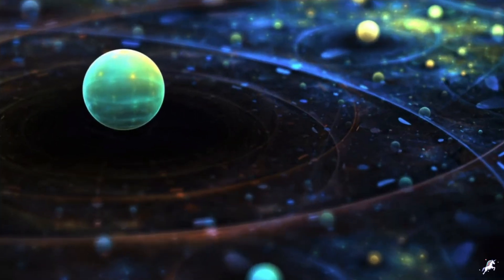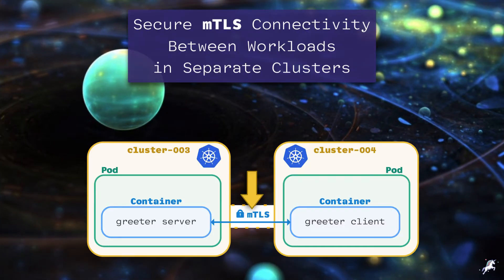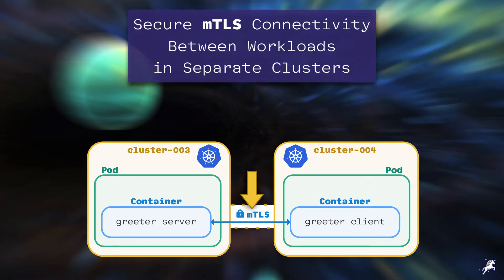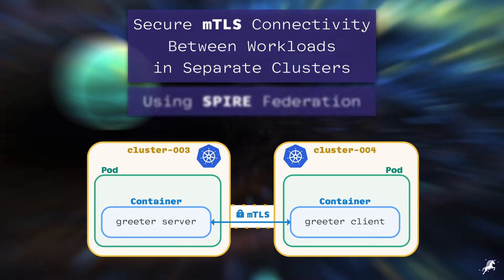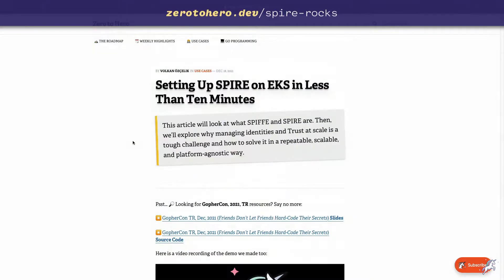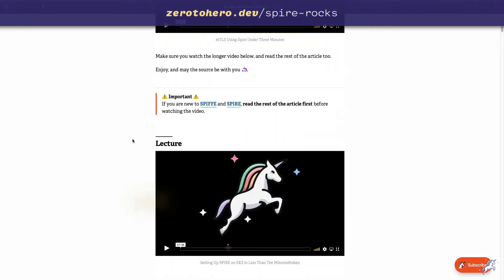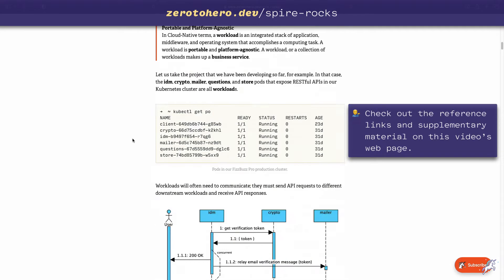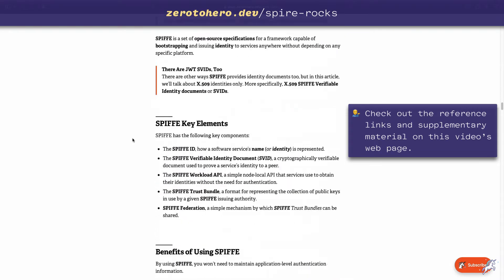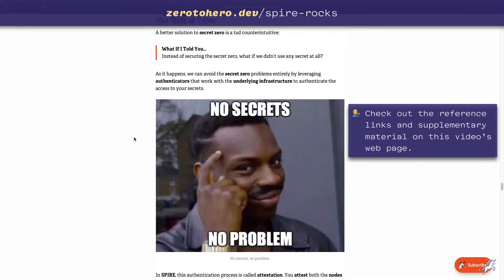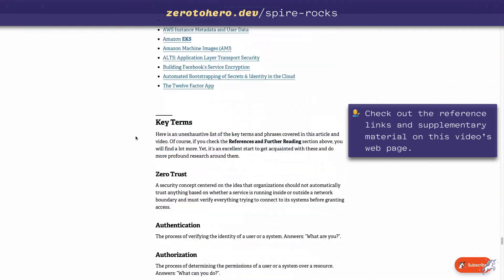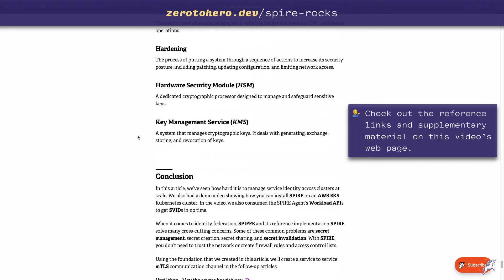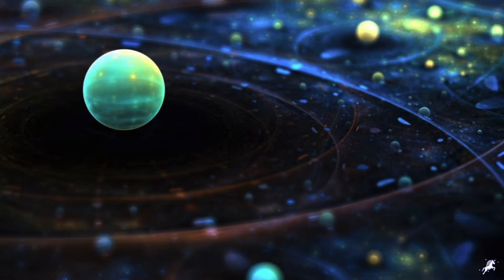In these series of videos, we are going to establish secure MTLS connectivity between two containerized applications in separate Kubernetes clusters using Spire Federation. If you are new to Spire, you might want to check the introductory article and its accompanying video first. Also, if you want to learn more about MTLS or any other tool or technology used in this video, you can check out the resources and further reading section on this video's webpage.